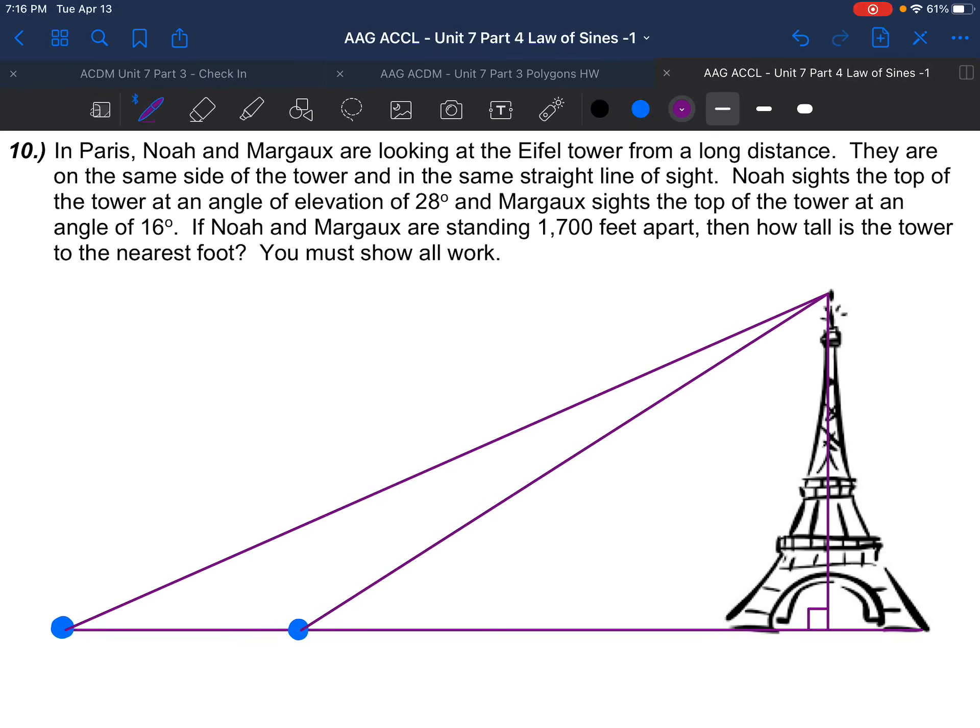Law of Sines, part four. Alright, last installment of these four videos, and we are left with a word problem here, so let's see if we can figure this out. So here we go. In Paris, Noah and Margot are looking at the Eiffel Tower from a long distance.